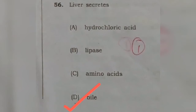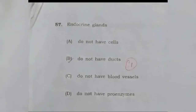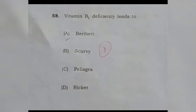Question 57: Endocrine glands are basically ductless glands, so the answer is option B — they do not have ducts. Question 58: Vitamin B1 deficiency leads to what? It leads to beriberi, option A. This is quite a common question in most exams, so please do remember it's beriberi.